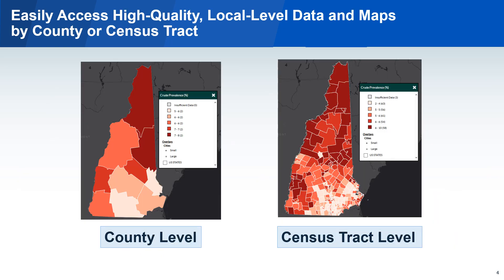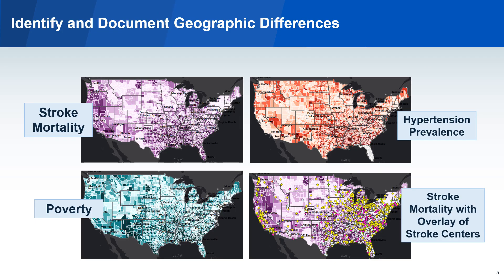These high-quality data sets can be mapped at the county level, and many of them can also be mapped by Census Tract. The maps that you create, as well as the data, can easily be downloaded to further analyze or share. With the maps that you create, you will be able to identify where the cardiovascular disease burden is greatest and where the burden is lowest. The maps shown in this example include the contiguous U.S., which can be useful for national context. Patterns can be observed at more local levels simply by zooming in to the area of interest.